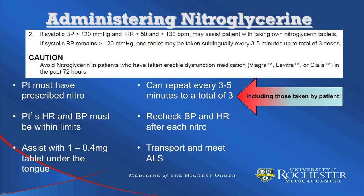For patients experiencing chest pain with a systolic blood pressure above 120 mmHg and a heart rate between 50 and 130 beats per minute, BLS providers may assist the patient with taking their own nitroglycerin tablets. The patient must have been prescribed nitro. This dose can be repeated every three to five minutes to a total of three, including those taken by the patient, provided heart rate and blood pressure remain within set limits. Blood pressure and heart rate should be rechecked after each nitroglycerin. To assist the patient, help them place one 0.4 mg tablet under their tongue and allow it to dissolve. Whenever nitroglycerin has been given, transport should be initiated with ALS aboard or ALS should be intercepted en route to the hospital.